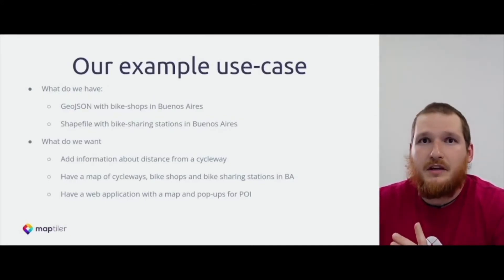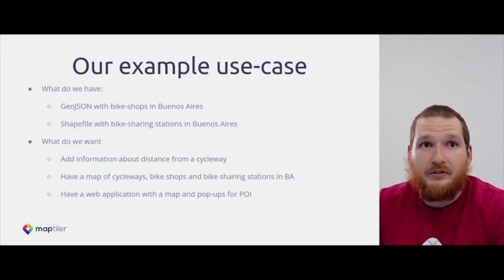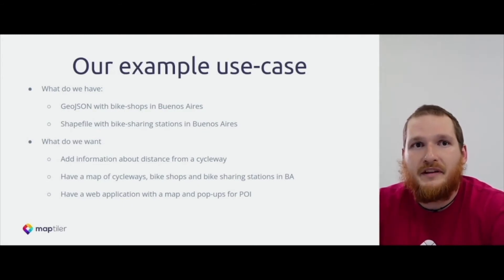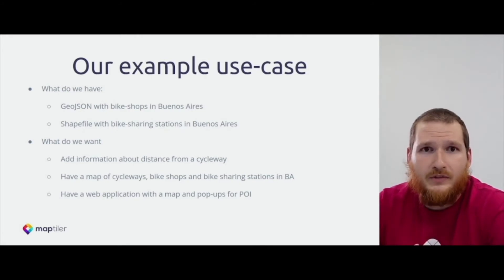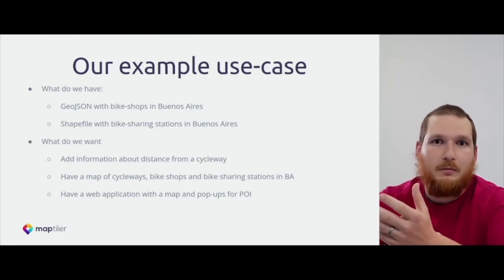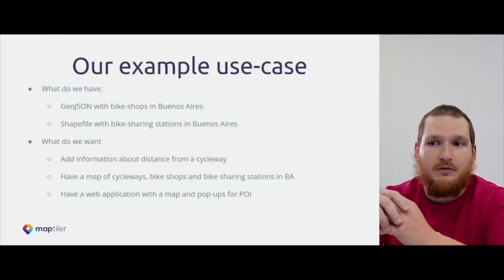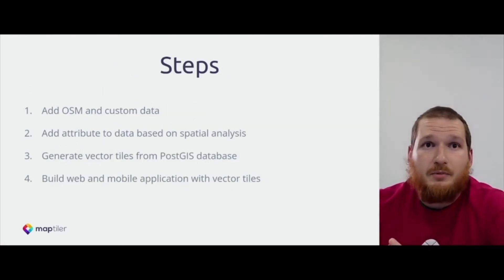Back to our use case. We have a GeoJSON with bike shops in Buenos Aires and a shapefile with bike sharing stations. These are open data from the Buenos Aires open data portal — big thumbs up for Buenos Aires for open data. We want to analyze the data and add information about the distance from the cycleway. We want a map of cycleways, bike shops, and bike sharing stations, displayed in our app on the phone, with a pop-up so we can click on a bike shop icon and get additional attributes, such as the distance from the cycleway.